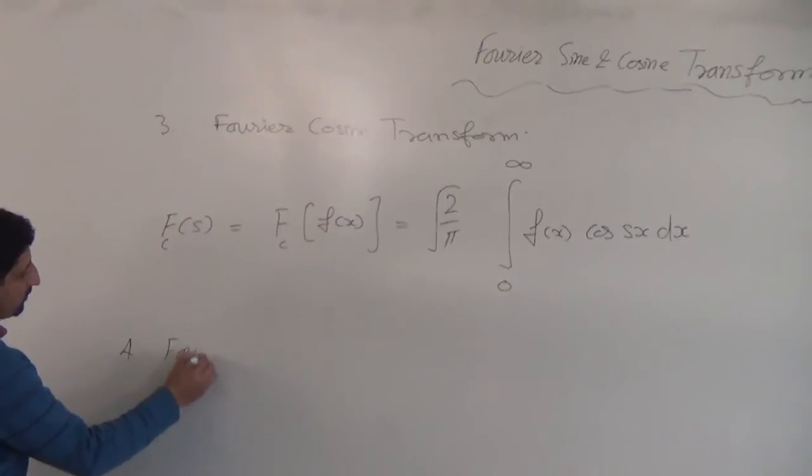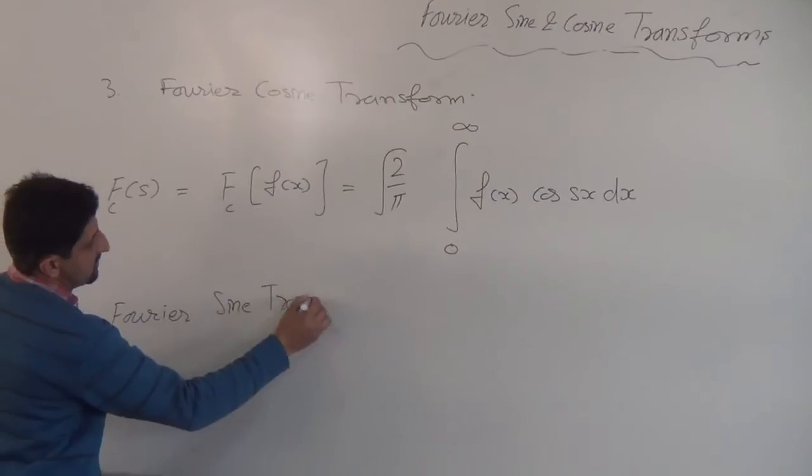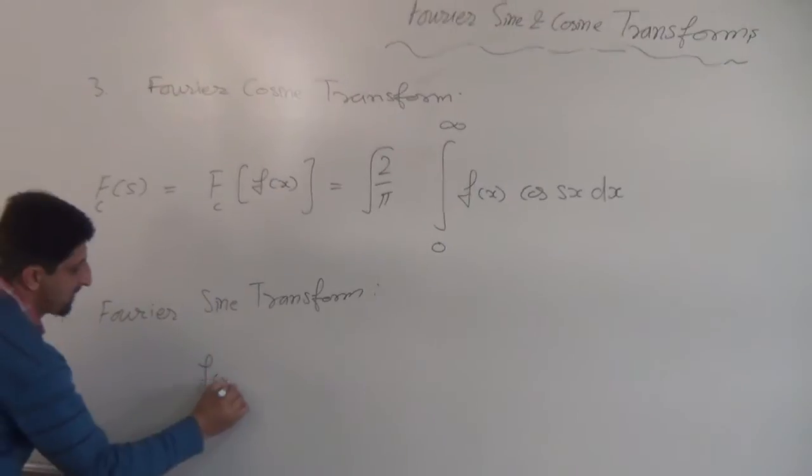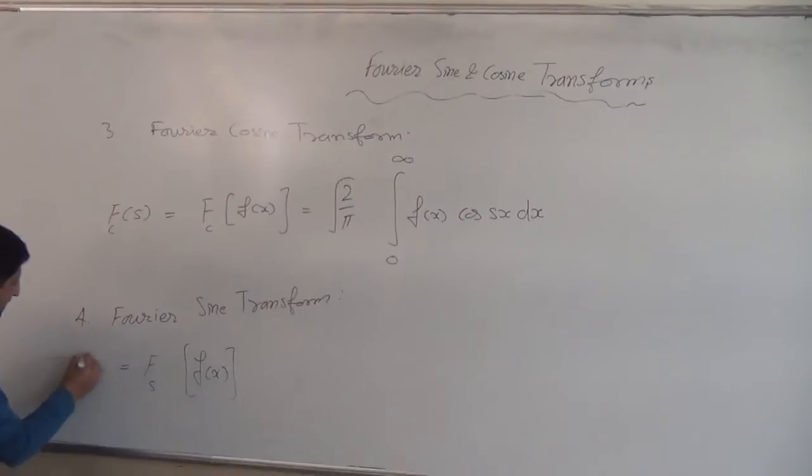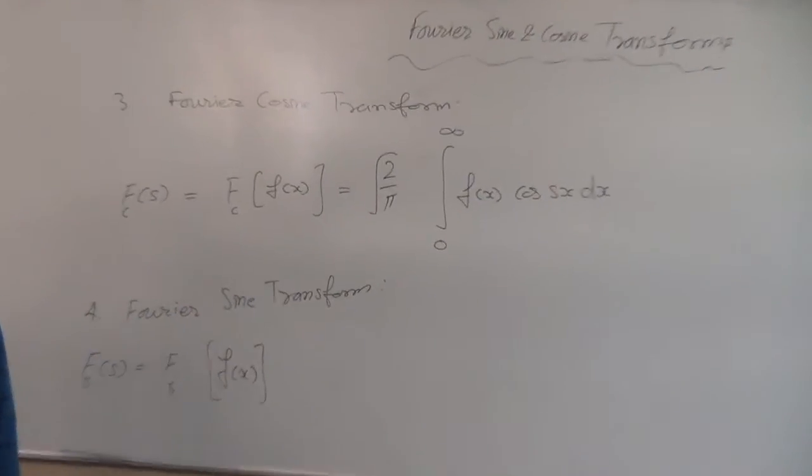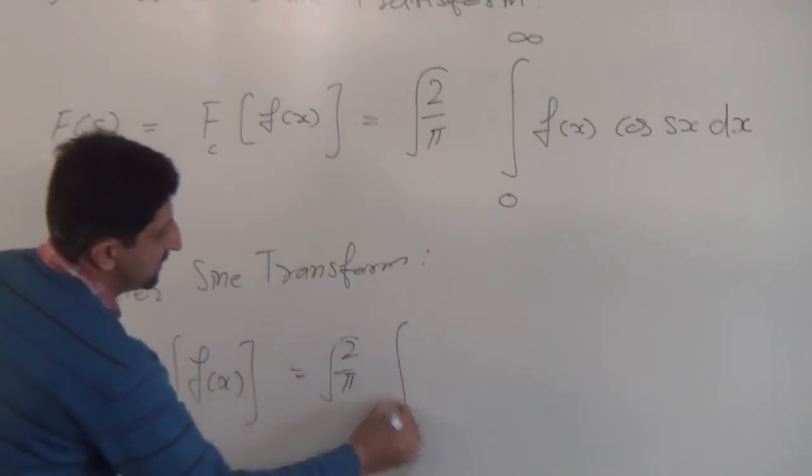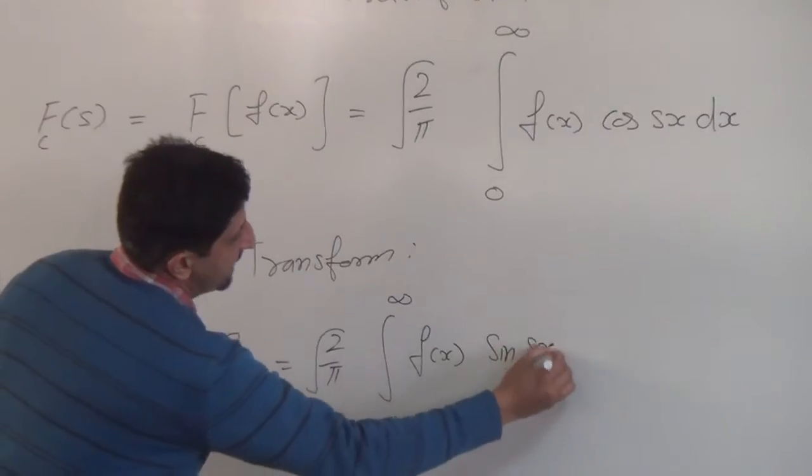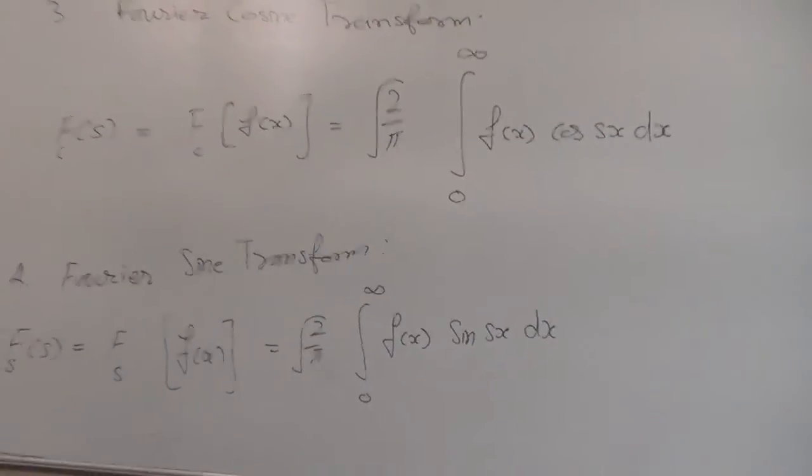Similarly, we have Fourier sine transform of function f(x). It is denoted by F_s or F_s of parameter s, where subscript s means sine. F_s(s) equals 2 upon pi under integral 0 to infinity f(x) sin(sx) dx. This is Fourier sine transform.